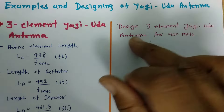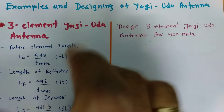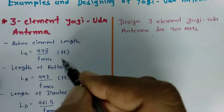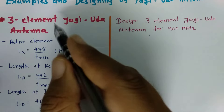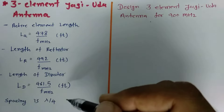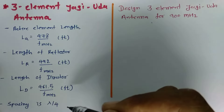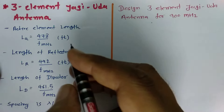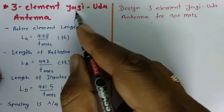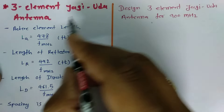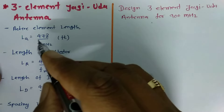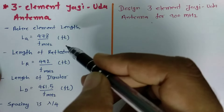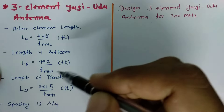In the last session, I explained three element Yagi-Uda Antenna designing. Once you understand these designing parameters, you can easily calculate examples based on three element designing of Yagi-Uda Antenna. The Yagi-Uda Antenna has three different types of elements: one is the active element, second is the reflector element, and third is the director element.